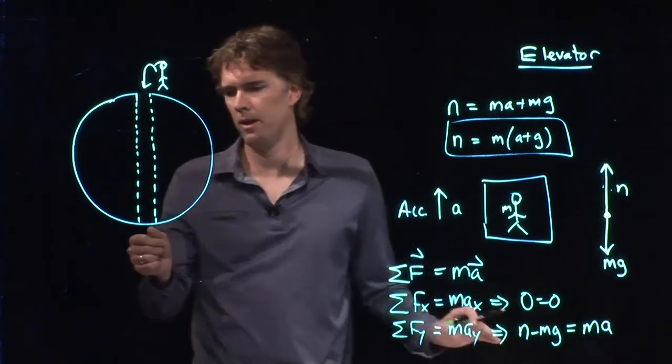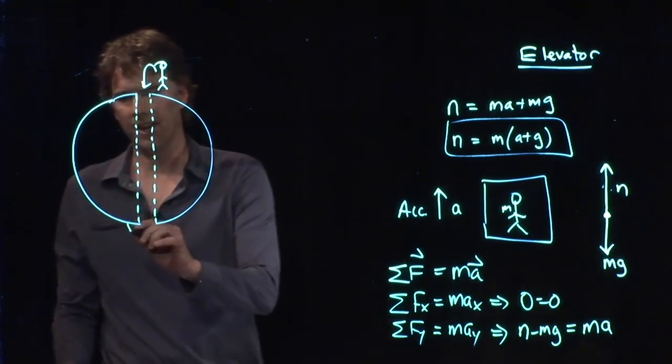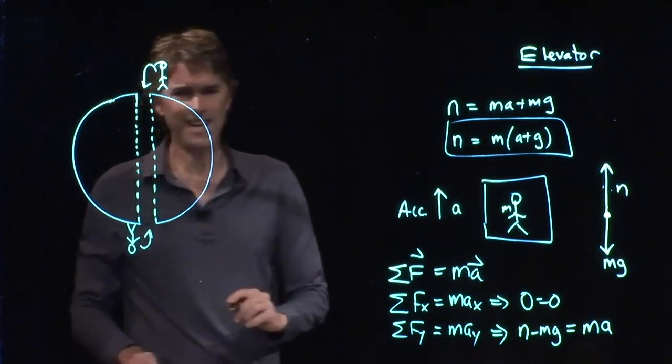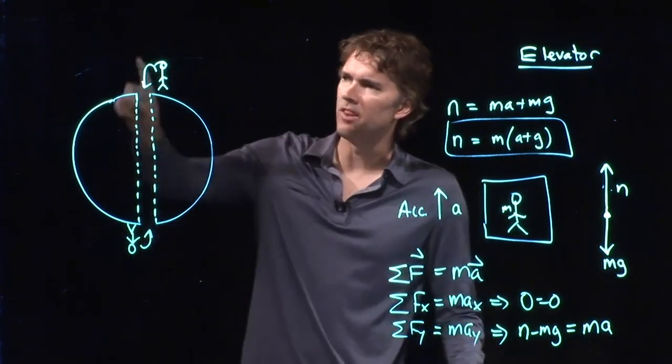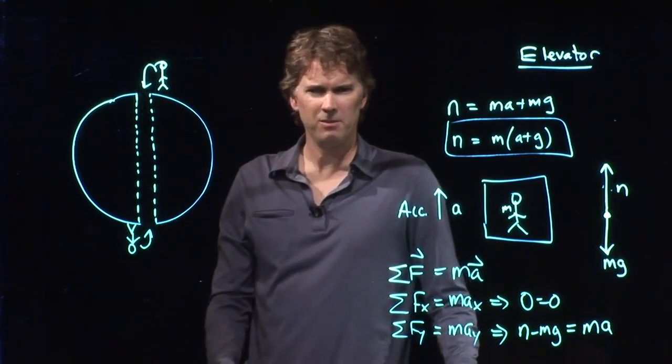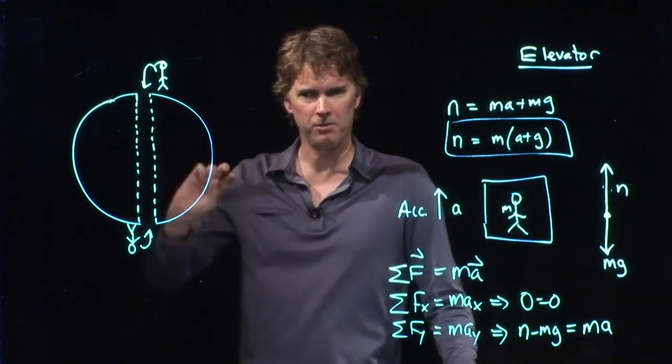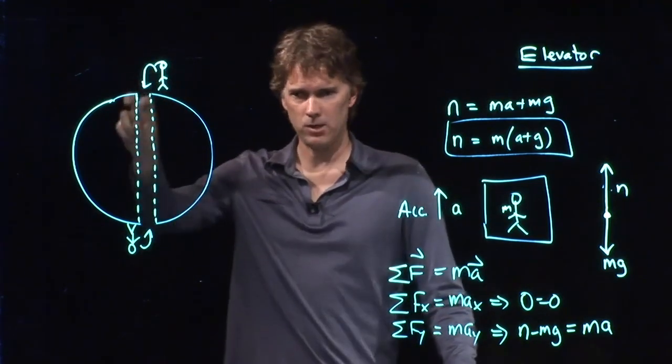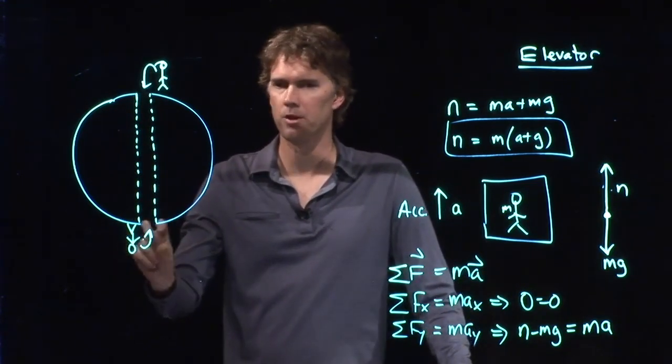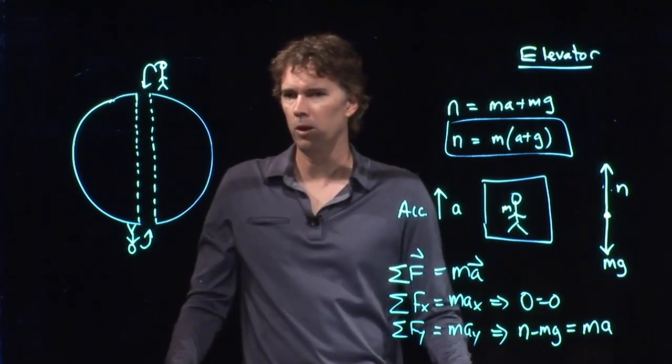Because somebody else standing on the other side of the Earth, if they jump in, are they going to come flying out the top of that tube on the other side? That doesn't really make sense, because this problem has to be symmetric. Whatever I do, if I jump in and start from rest, it should be the exact same as the other person jumping in and starting from rest.